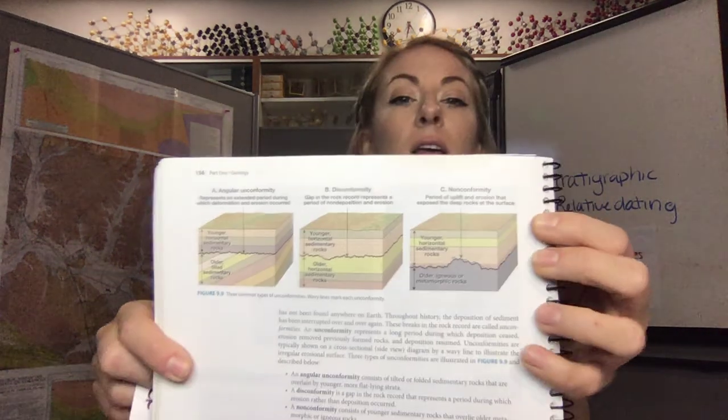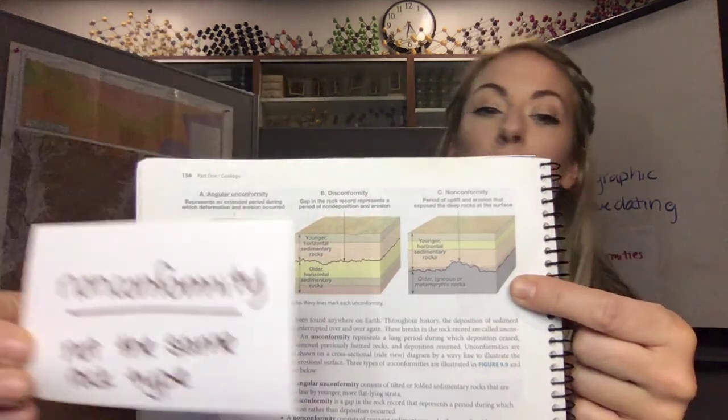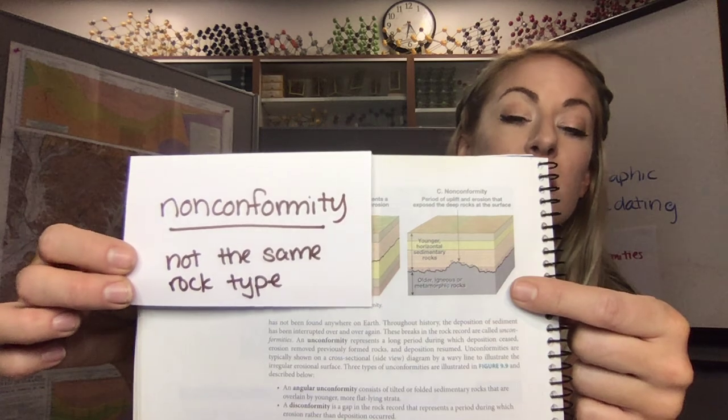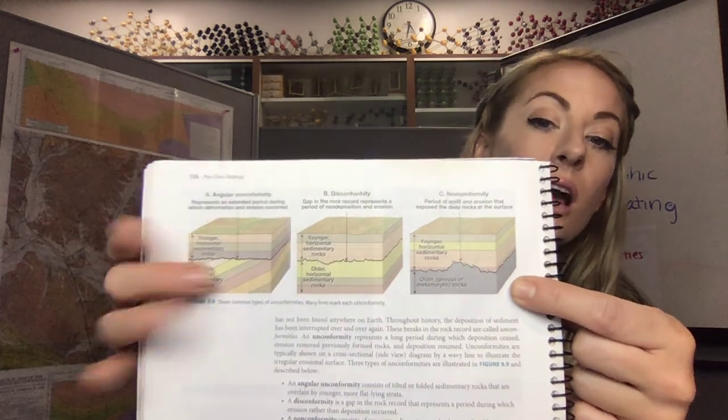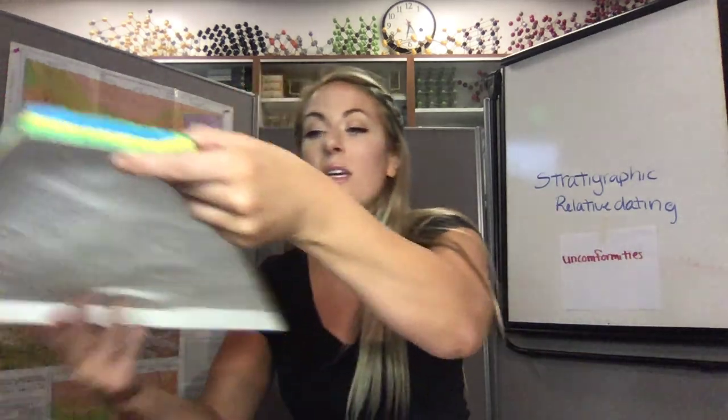The last kind we have is called a nonconformity. Nonconformities, the way I would remember it, is that they are not the same type of rock. A nonconformity happens between igneous material and sedimentary material. So this can look like a horizontal continuous layer, as you will see here.